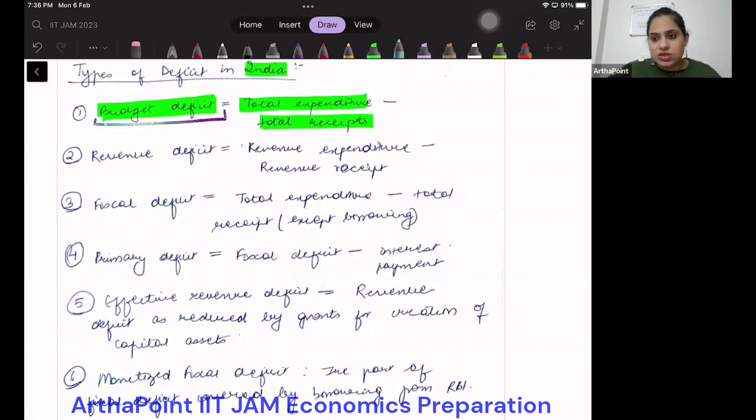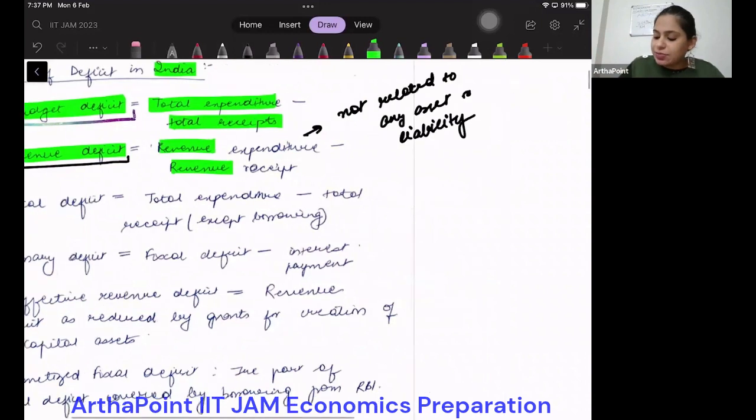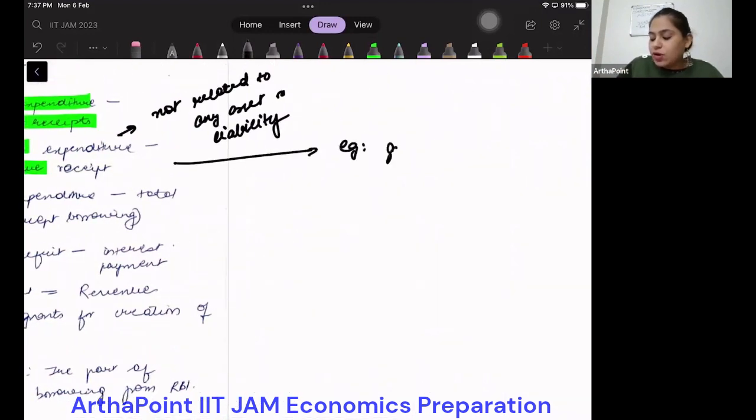The second one that you have is called revenue deficit. What is revenue deficit? Revenue expenditure or revenue receipt, they are not related to any asset or liability. So neither any asset is being created, nor any asset is being reduced. Neither any liability is being created, nor any liability is being reduced. Such are called revenue expenditures or receipts. Just for example, when you pay salary to a government employee, it's my expenditure, but I am not creating an asset.